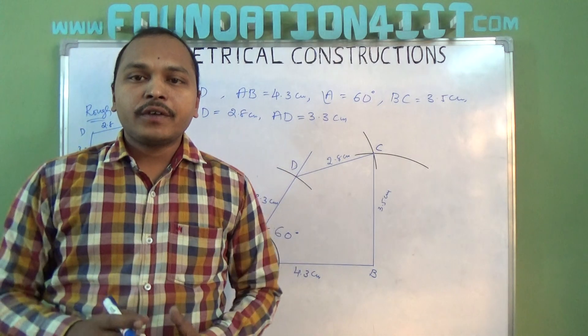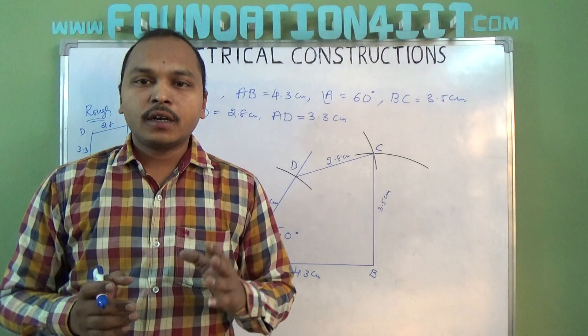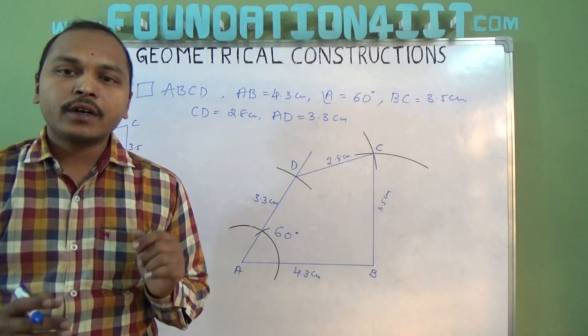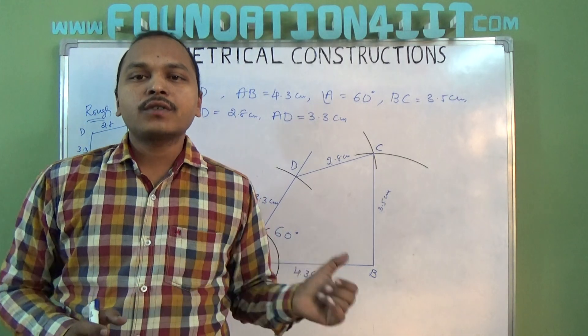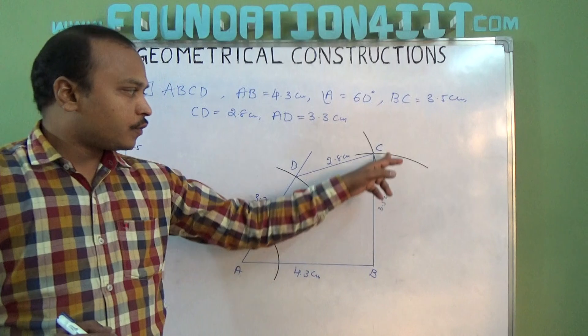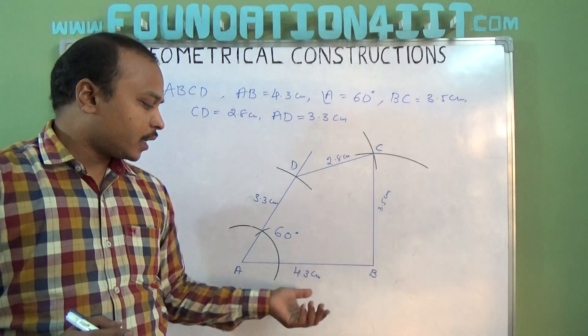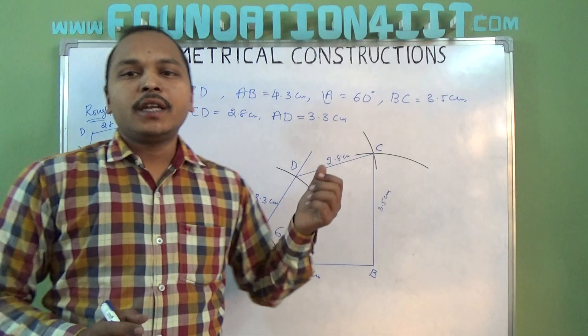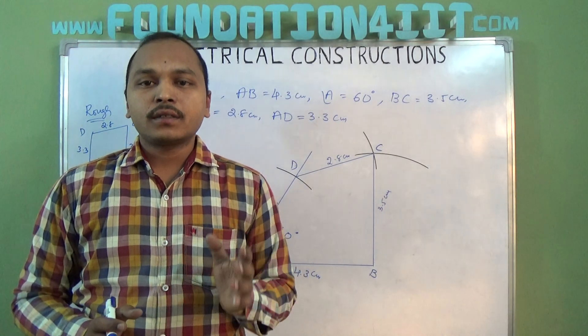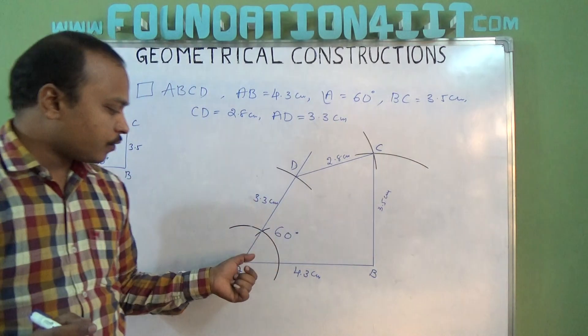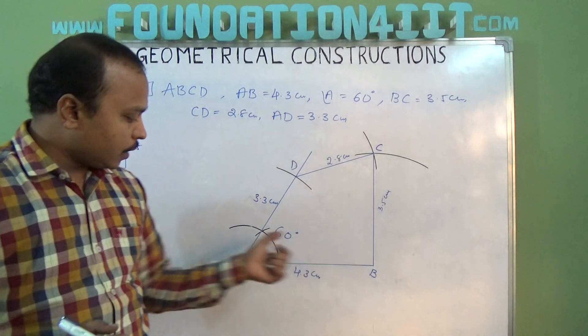This is the way we can construct any quadrilateral when four sides and one angle is given. Which angle is given, that side only we should draw first because you can construct the angle directly. If angle A is given, either AB or AD we can construct as the base.